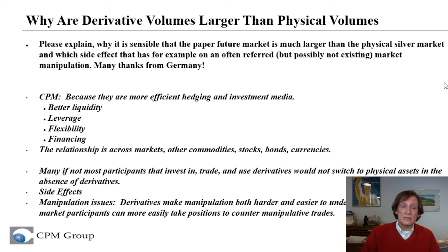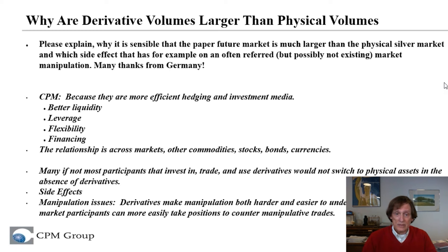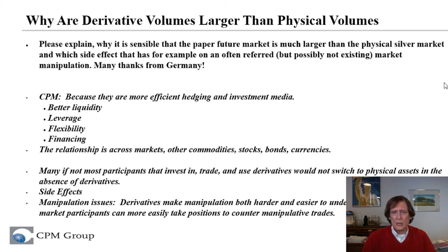You put a dollar into an ounce of silver and it goes up a dollar — you've made a dollar. You put 15 cents into an ounce of silver in the futures market and it goes up a dollar — you've just made a dollar on a 15-cent investment. They're more flexible, they provide better financing, especially with exchange-traded futures and options, because exchanges monitor counterparties and regulators monitor the exchanges. So they're easier to finance because there's more information.